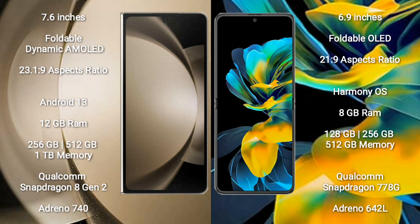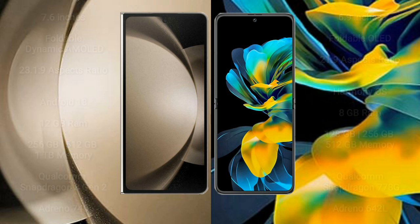Huawei Pocket Ace comes with 8GB RAM and 128GB, 256GB, or 512GB internal storage options. It is powered by a Qualcomm Snapdragon 778G processor with Adreno 642L GPU.